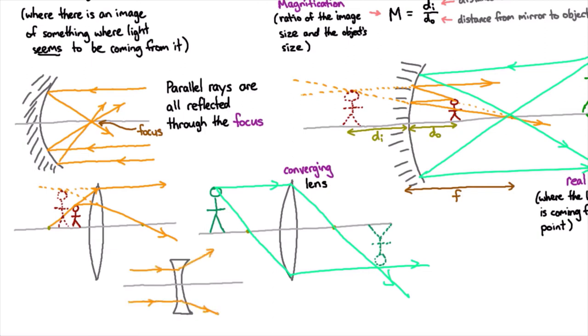If you build them just right, you can make it so that they all seem to spread out from a particular point, which is also called the focus. Because lenses are symmetric, you can have light go either way - you have a similar focus on the other side. You can also make images with diverging lenses.